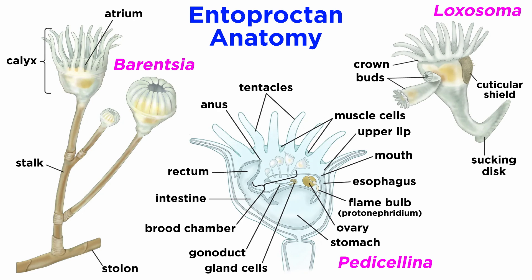Goblet worms lack a true fluid-filled coelom in which to house their internal organs. Instead, the few organs they do have are embedded within their connective tissue that lies between their stomach and the base of their ciliated, crown-like lophophore. Like the bryozoans, the goblet worms feed and respire using their lophophores.